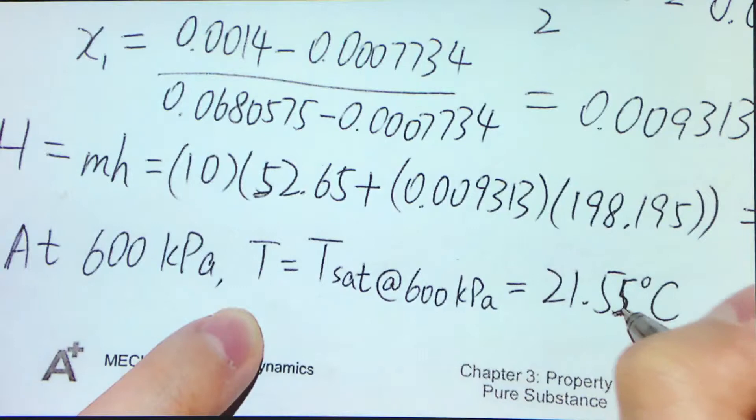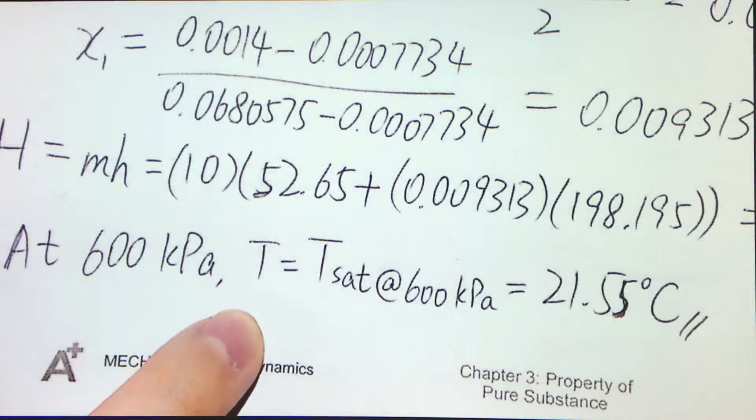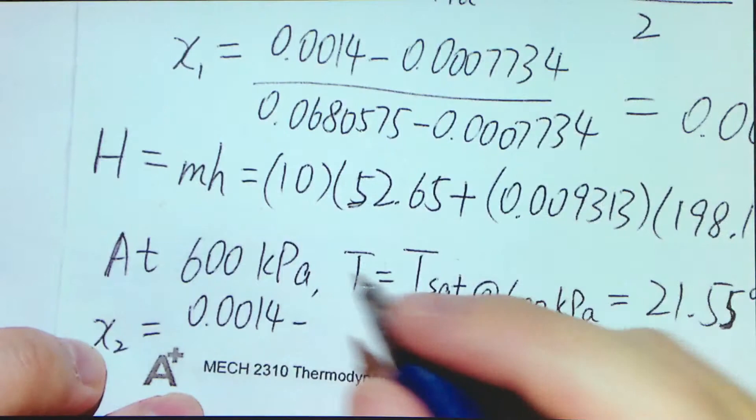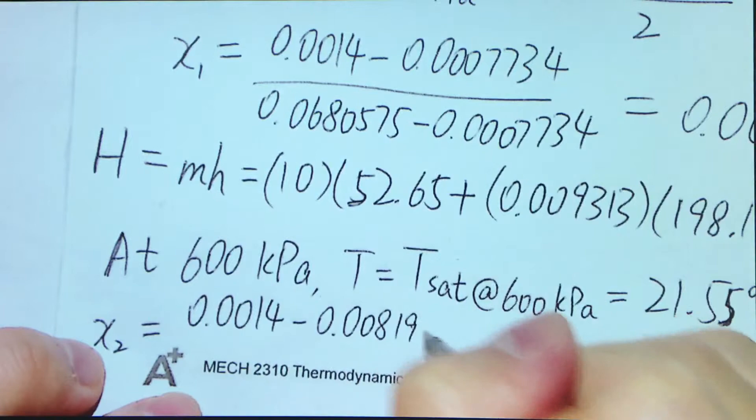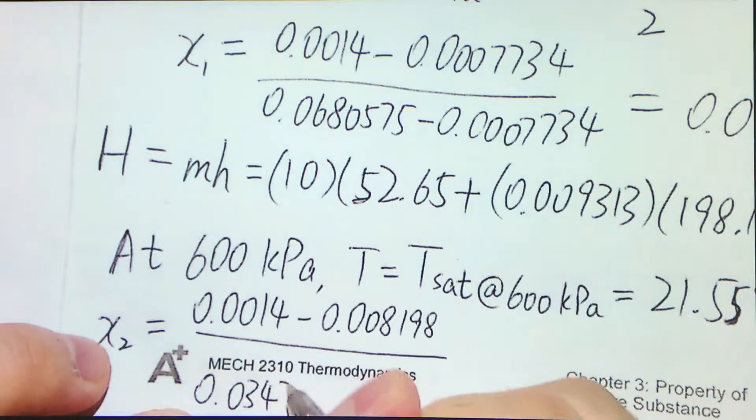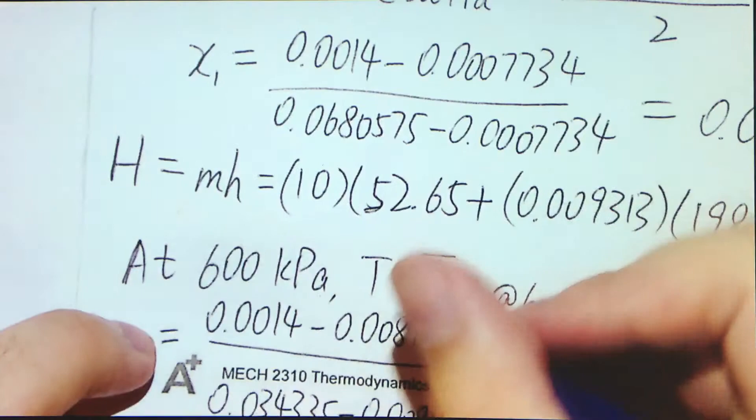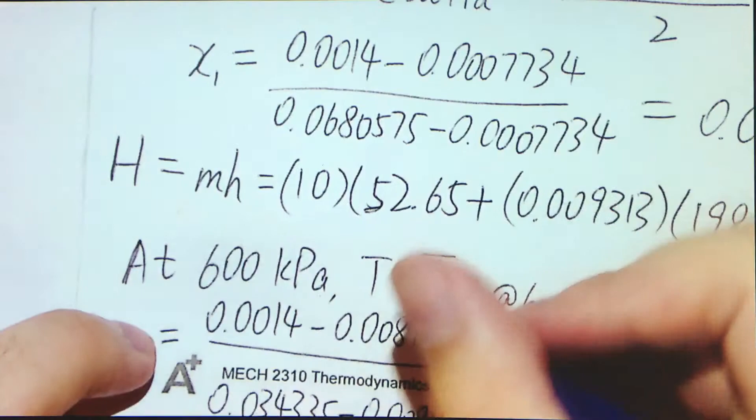How about the total enthalpy? Again, we calculate the quality first, and notice that for 600 kilopascal, it is still a saturated mixture. We can just calculate the quality. So here, X₂ equals 0.0014 minus the Vf which is 0.0008198, divided by 0.03476 minus 0.0008198. I missed a zero here. So 0 should be 3 zeros after decimal place. You get this value 0.01731.